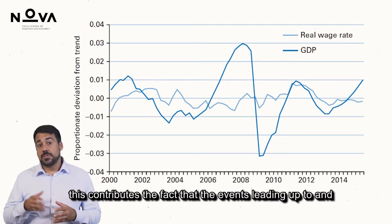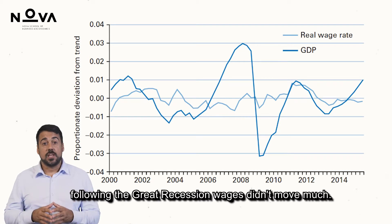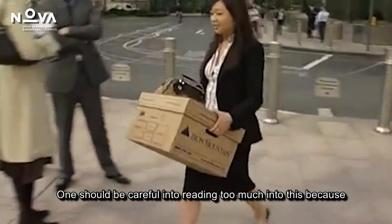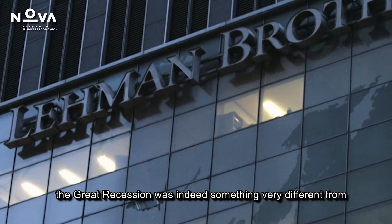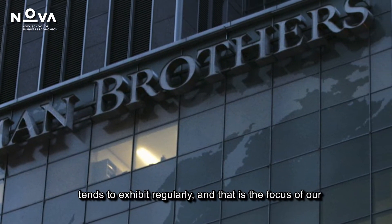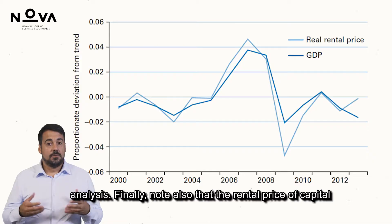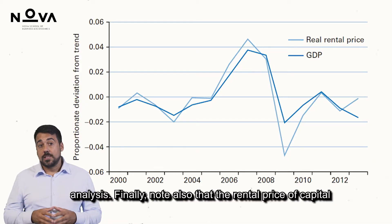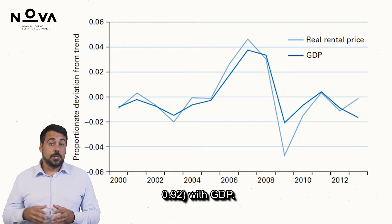To this contributes the fact that in the events leading up to and following the Great Recession, wages didn't move much. One should be careful not to read too much into this, because the Great Recession was indeed something very different from the average boom-recession cyclical behavior the economy tends to exhibit regularly. Note also that the rental price of capital is also very cyclical, with a very high correlation of about 0.92 with GDP.